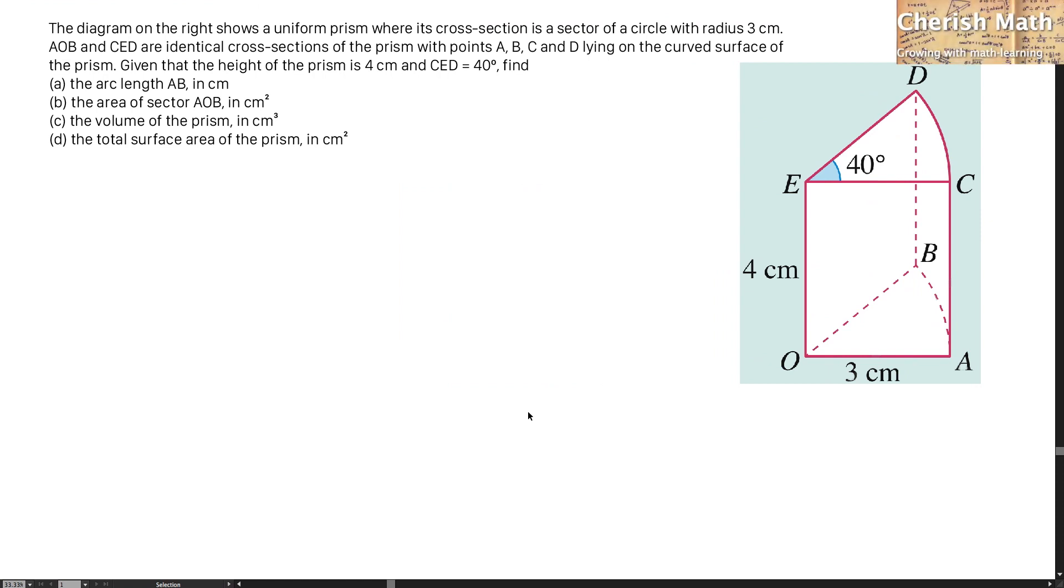Hi from Challenge Math, and here is the question. The diagram on the right shows a uniform prism where its cross-section is a sector of a circle with radius 3 cm. AOB and CED are identical cross-sections of the prism with points A, B, C, and D lying on the curved surface of the prism. Given that the height of the prism is 4 cm and angle CED is 40 degrees,